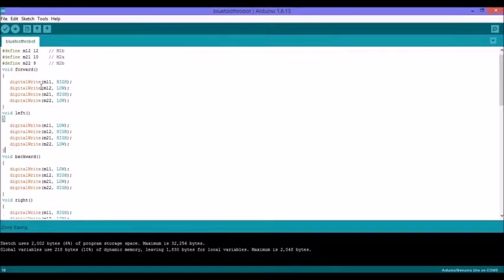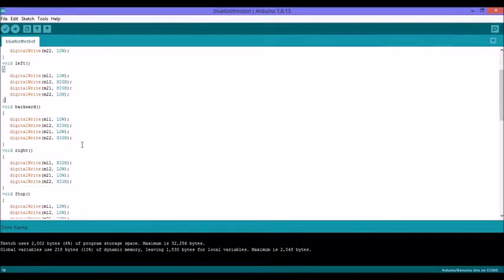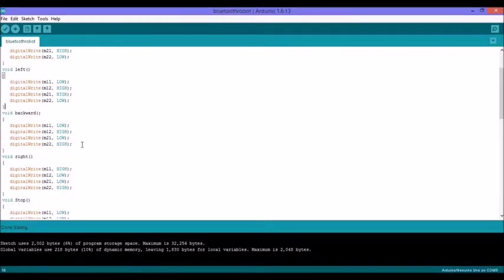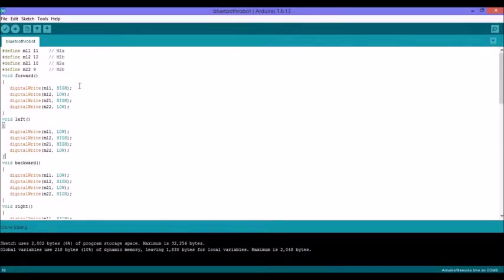Then create functions like forward, left, backward, right, and stop. Some pins are high and some are low. For forward, M11 is high and M12 is low, which commands the left motors to rotate forward, and similarly for the right side. For left turn, we rotate the left motors backward and the right motors forward.